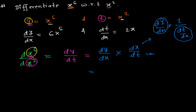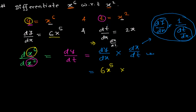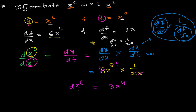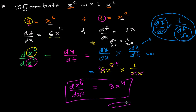Now we can calculate the whole value. In place of dy/dx we write 6x⁵, and in place of dx/dt we write 1 over 2x. So we get 6x⁵ times (1 over 2x), which gives us 3x⁴ after cancellation. This is the derivative of x to the power of 6 with respect to x squared — exactly what the question was asking. Simple trick!